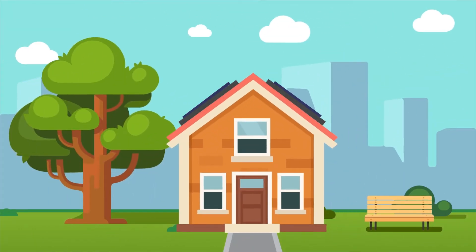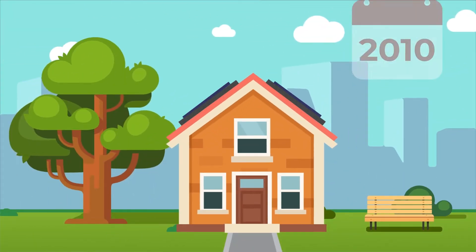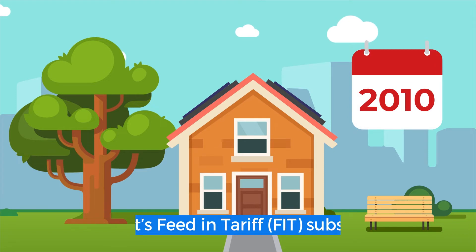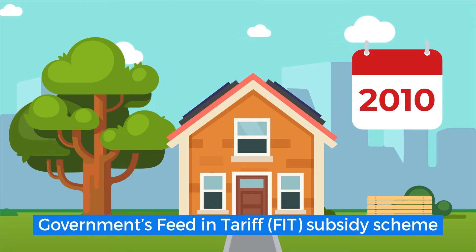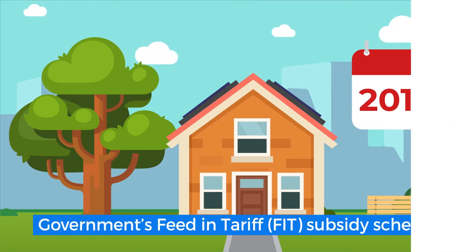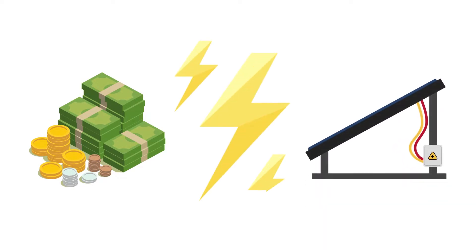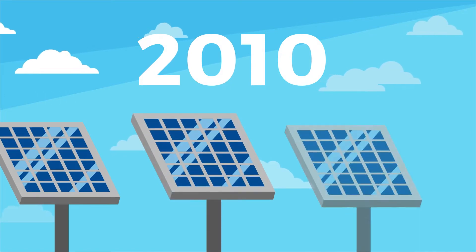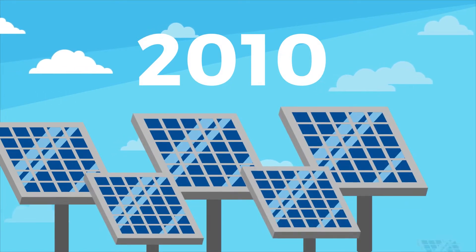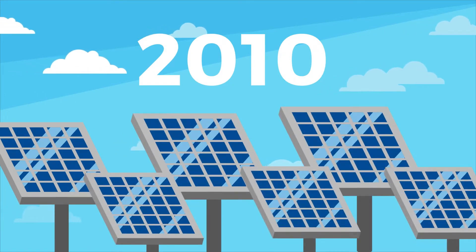In the UK, solar PV first became popular in 2010 with the introduction of the government's Feed-In Tariff subsidy scheme. FITs paid a sum of money for each unit of electricity produced by a solar PV array, and back in 2010, FITs were an essential part of all solar PV financial models.